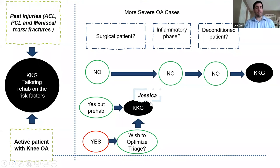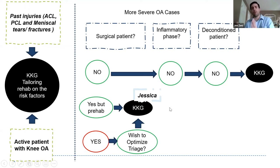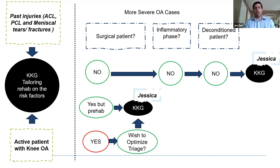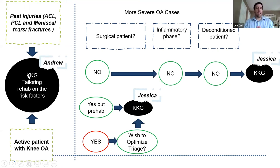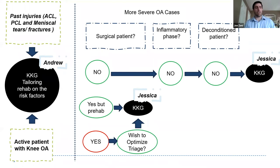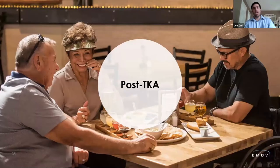In our cases: Jessica, who's at end stage and planning for surgery, would undergo a Knee KG as part of prehab to identify biomechanical and musculoskeletal impairments. Andrew, our more active patient, I want to address his current pain and identify risk factors that may make OA worse in the future — so I would do a Knee KG with him as well.